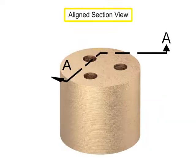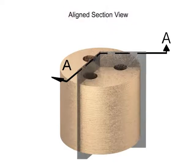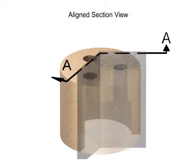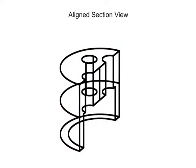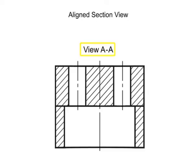Aligned section views occur where the cutting plane bends to pass through specific features of an object, then rotates to a normal vertical or horizontal plane, and is projected to the section view.